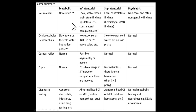Infratentorial means brainstem and cerebellum — under the cerebellar tentorium. Just like with brainstem lesions in stroke, the key thing is you'll get ipsilateral cranial nerve deficits and contralateral motor or sensory deficits. For example, a patient with uncal herniation compressing the midbrain will have an ipsilateral third nerve palsy and a contralateral hemiplegia, telling us that the pressure is on the midbrain.